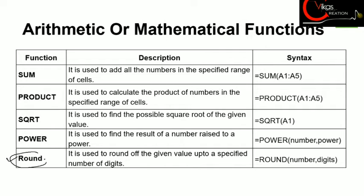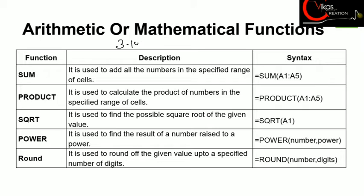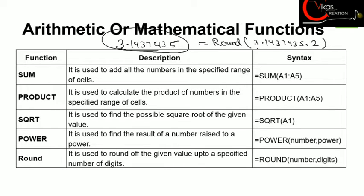Our next function is the ROUND function. It is used to round off a number up to a specified number of decimal digits. For example, if we have the number 3.1437435 and we want to round it to 2 decimal places, we write equals to ROUND(3.1437435, 2), where the first argument is the input value and 2 is the number of decimals. The result will be 3.14.